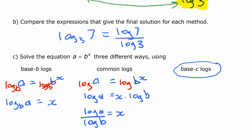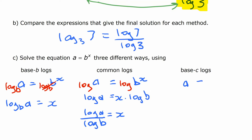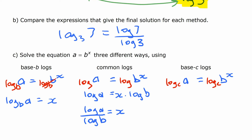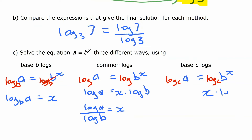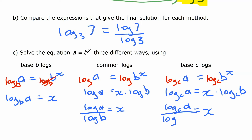Thirdly, we use just any base in general. Starting with the same equation, we take log base c of both sides. Neither side cancels right away, but we put x in front to get x times log base c of b equals log base c of a. Then divide both sides to get log base c of a over log base c of b. So in general, log base b of a equals log a divided by log b in base 10, or more generally log of a over log of b in whatever base you like.